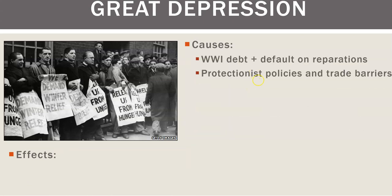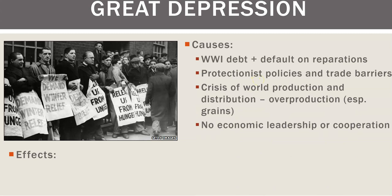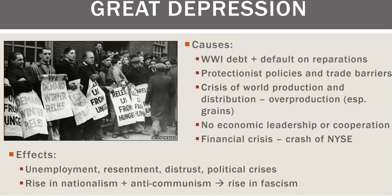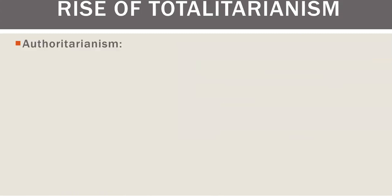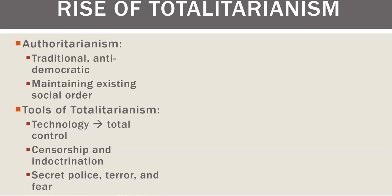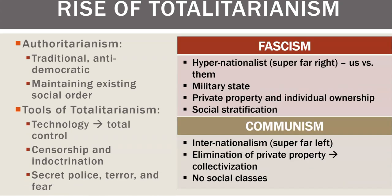Causes of the Great Depression: they overproduced, there's no economic leadership or cooperation. The stock market crash did not cause the Depression — the crash of the New York Stock Exchange was a symptom of the other problems. Here are the effects. The fascists and the communists — neither one of these people are nice. The Italians are the best example of the fascists, and their system is called corporatism — they take different sectors of the economy and say you run this together, but all for the good of the state.